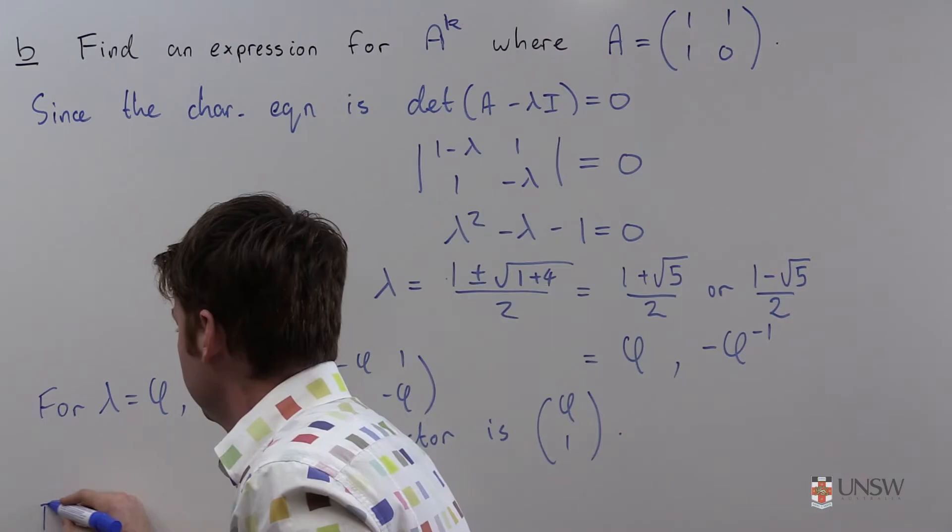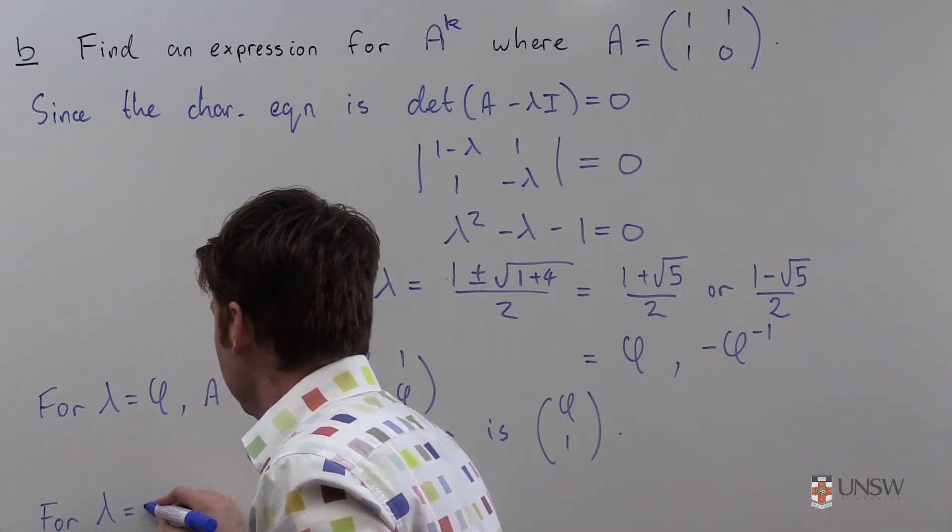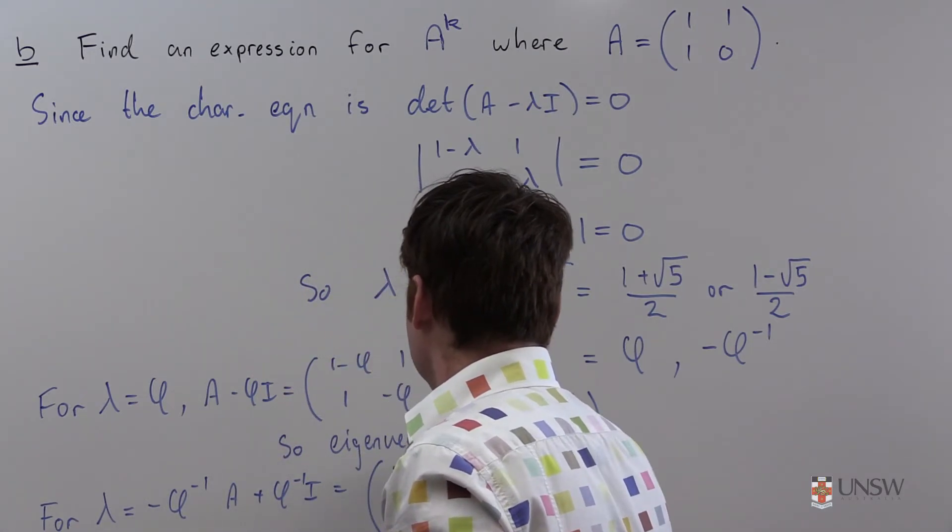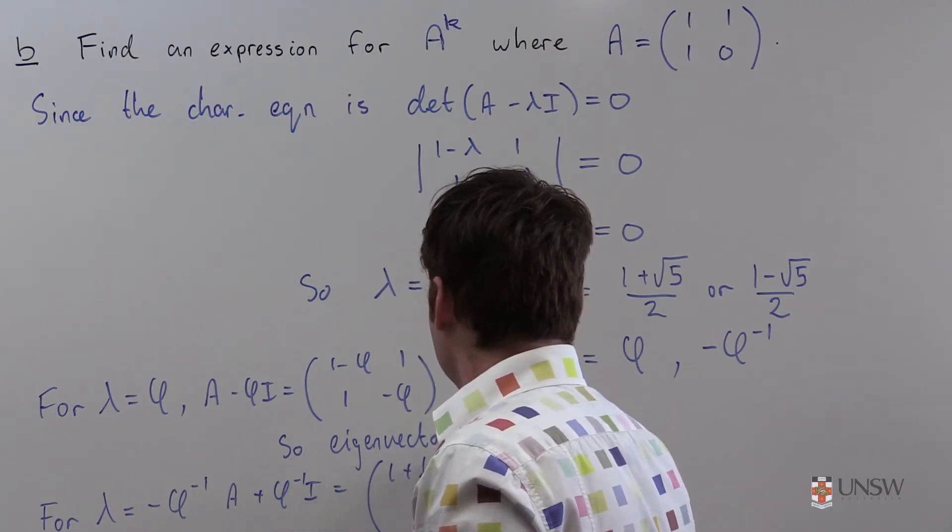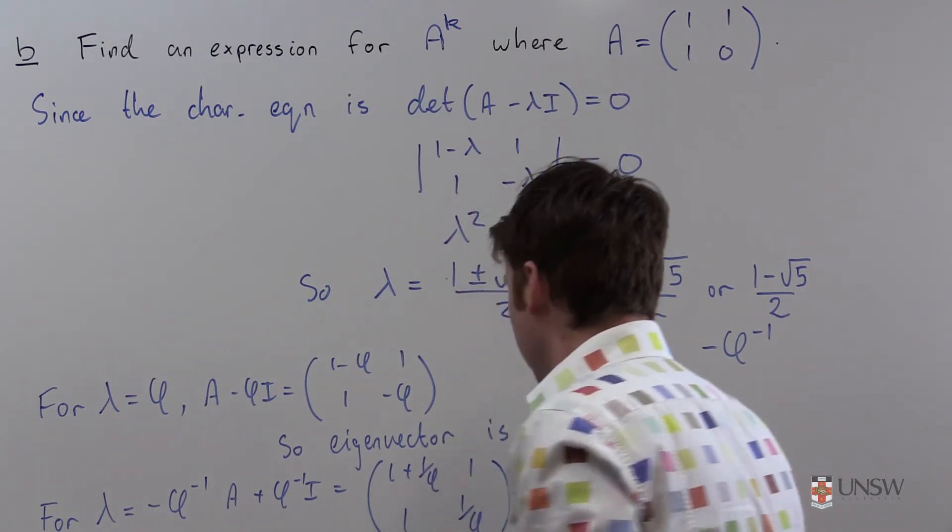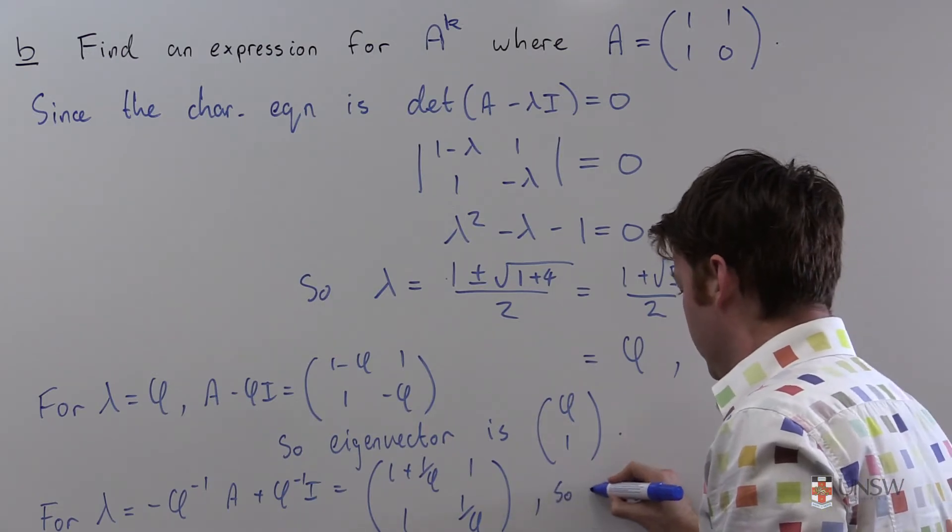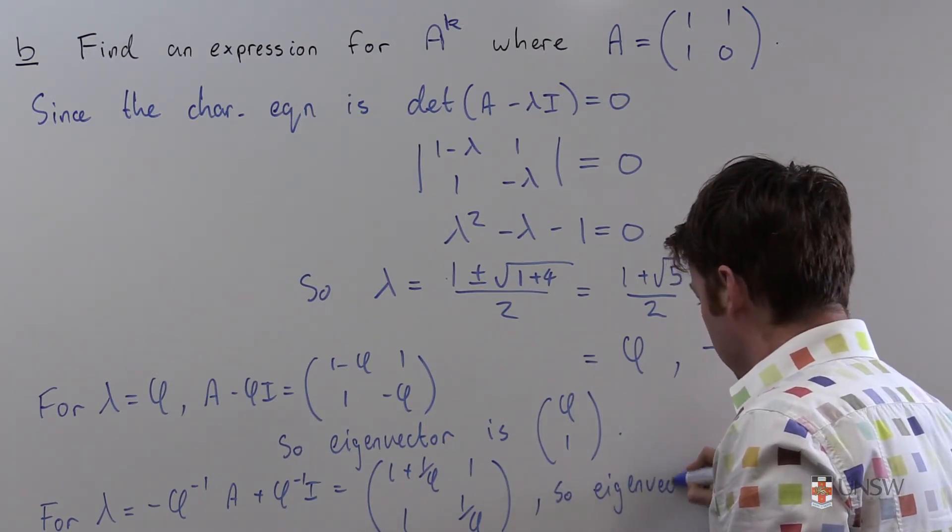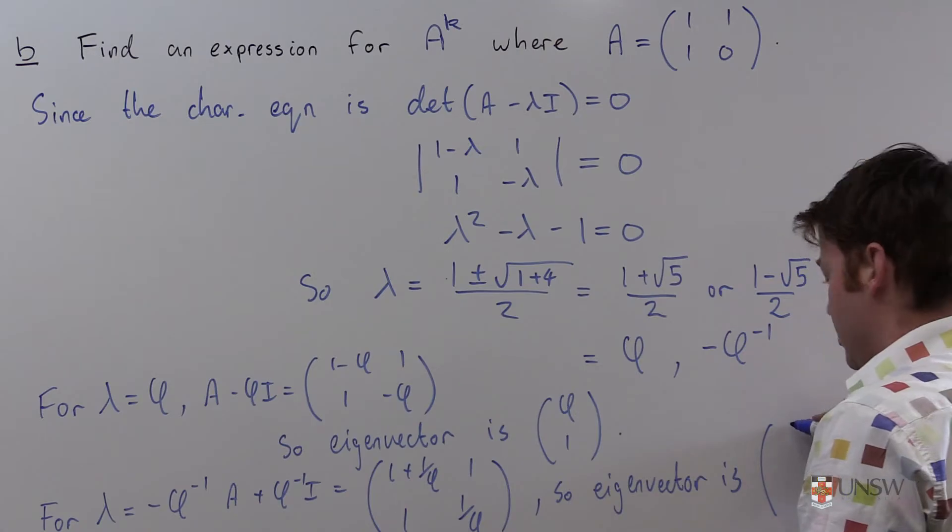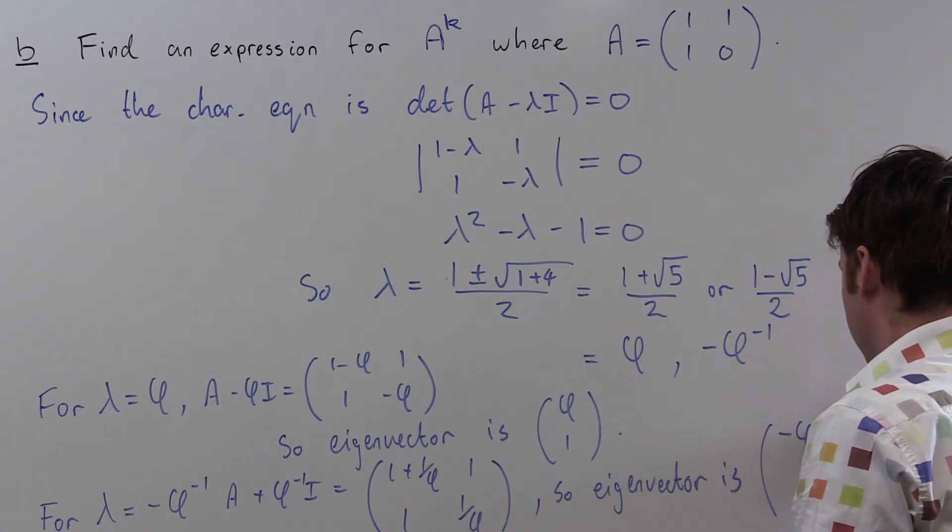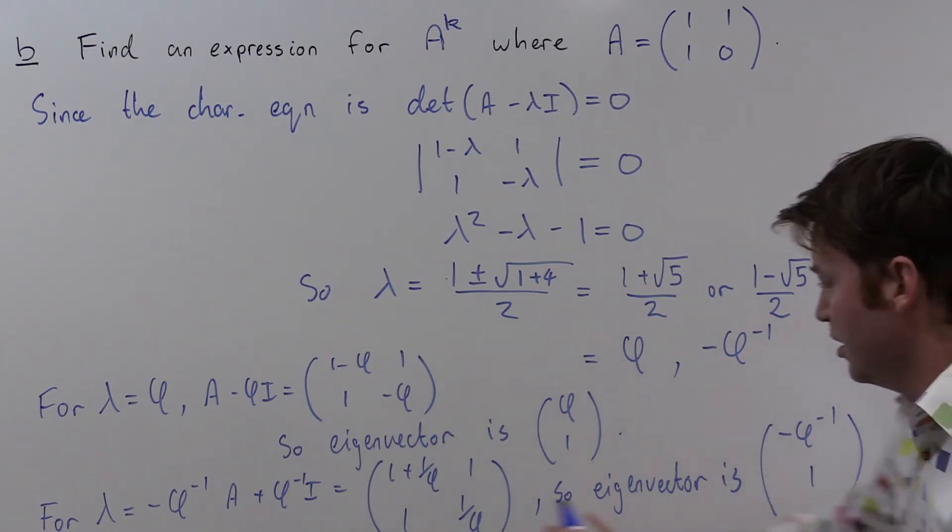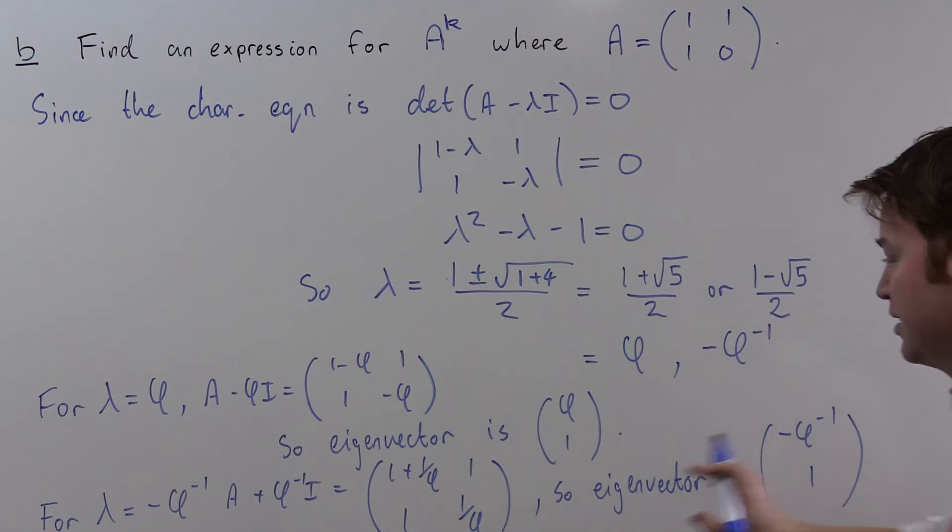So for λ equals -φ^(-1), A + φ^(-1)I is equal to the matrix [1 + φ^(-1), 1; 1, φ^(-1)]. And again, I'll use my cheap trick, so I'll take this one, reverse the entries, negate one, that is [-φ^(-1), 1]. Excellent, my eigenvectors. And again, I'll just quickly go aside and make sure that this is in fact in the kernel here.